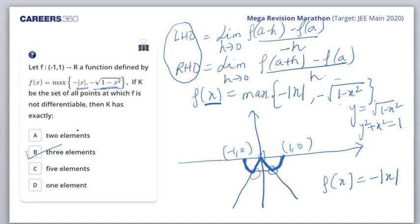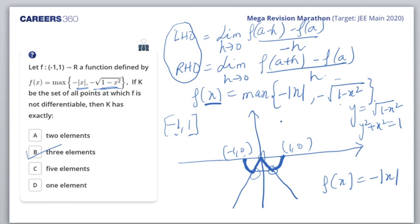Somrik asks about the endpoints at ±1. At x=-1, only the right-hand derivative is needed; at x=1, only the left-hand derivative is needed - so those points are differentiable. The three interior corners are the non-differentiable points, giving answer B with 3 elements.